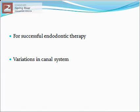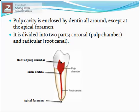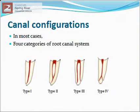Variation in canal system must also be kept in mind while performing root canal treatment. The pulp cavity lies within the tooth and is enclosed by dentine all around except at the apical foramen. The pulp cavity is divided into two parts: pulp chamber and root canal, connected to each other through the canal orifice.